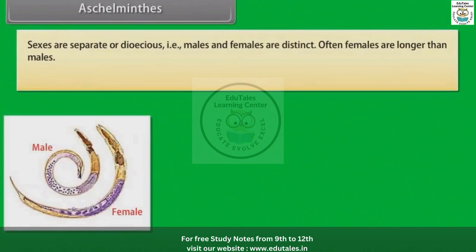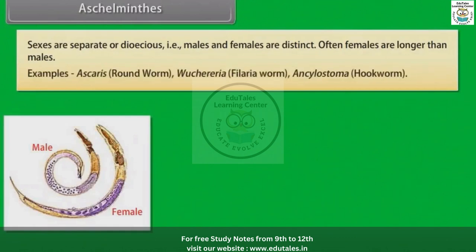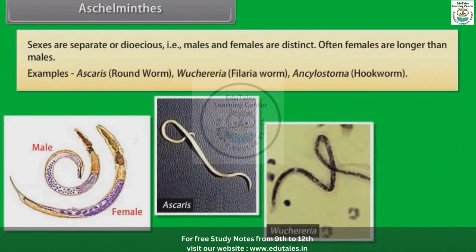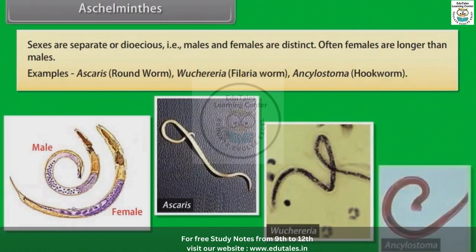Often females are longer than males. Examples: Ascaris, that is roundworm; Wuchereria, that is filarial worm; and Ancylostoma, that is hookworm.